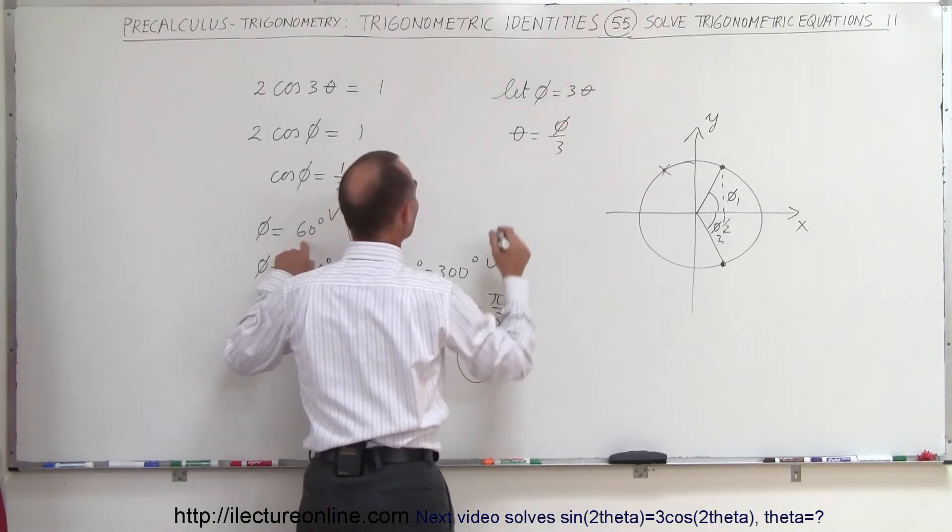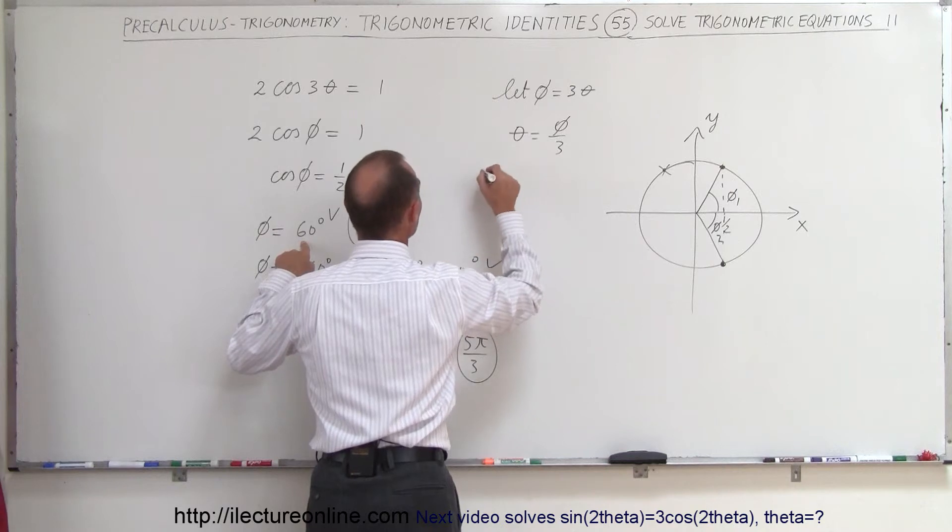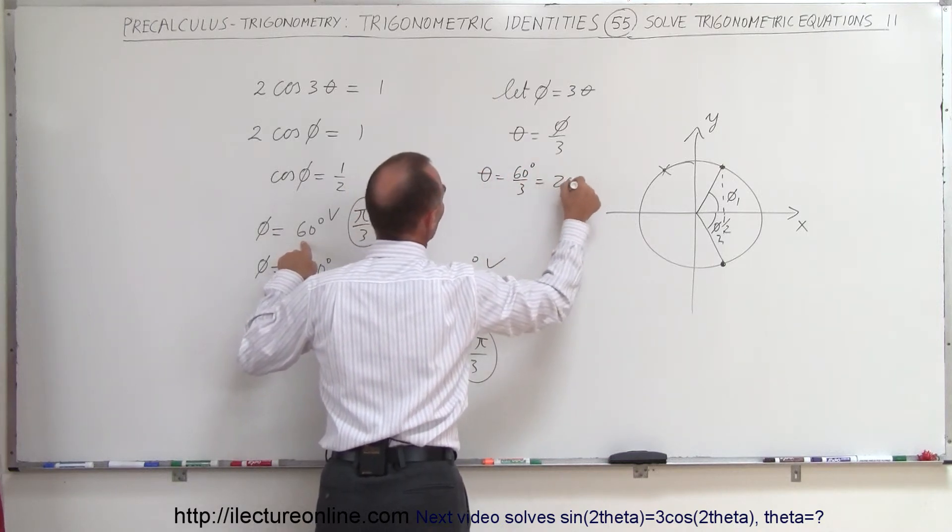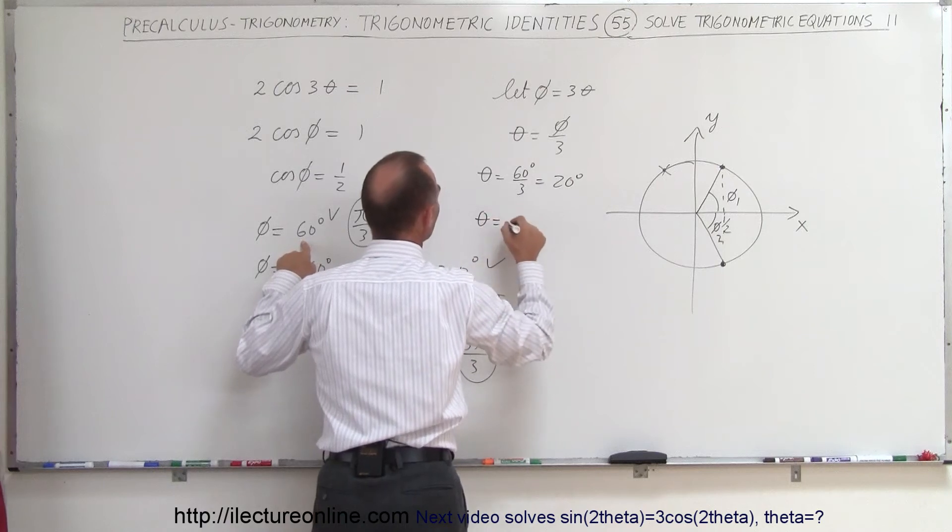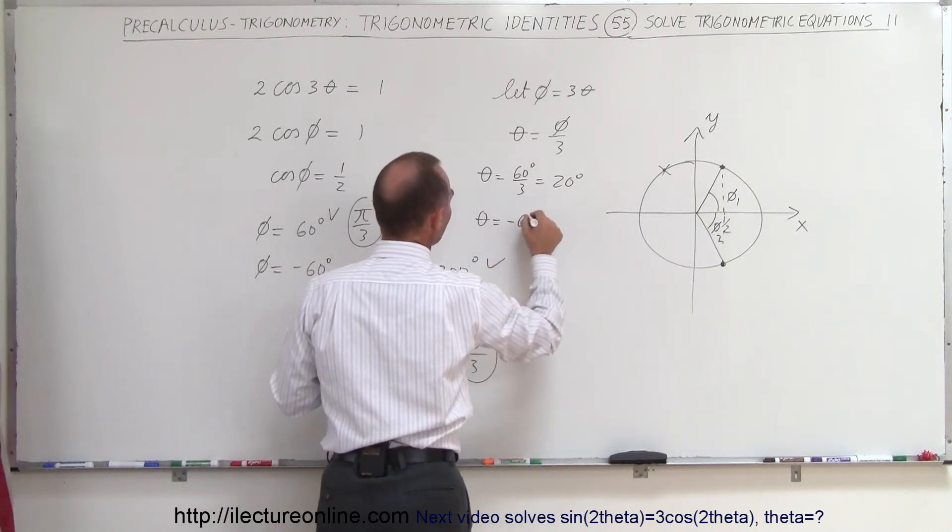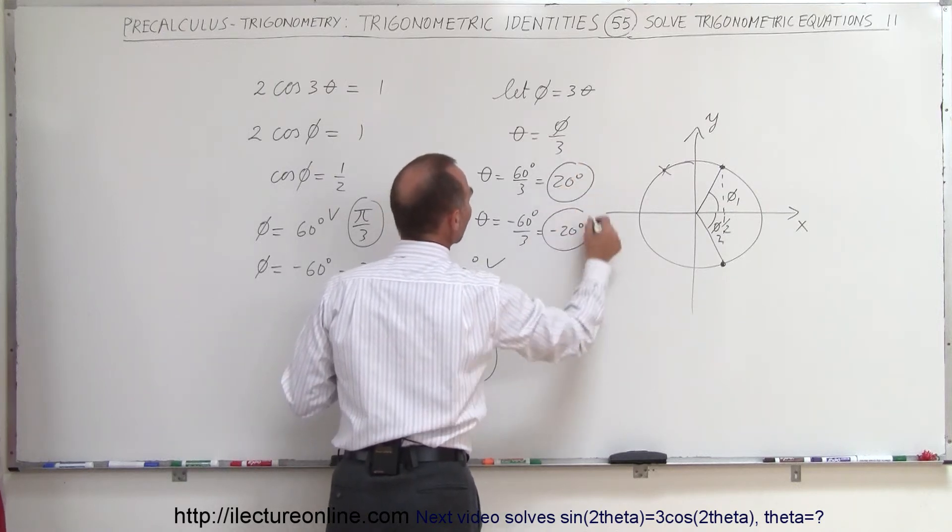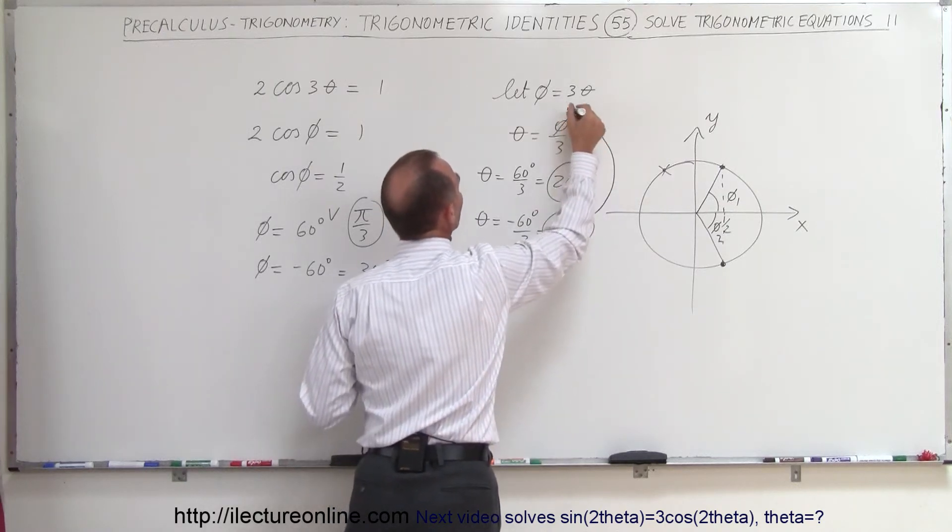We can say that theta is equal to phi divided by 3. So, on one occasion, when phi was equal to 60 degrees, theta is equal to 60 degrees divided by 3, which is equal to 20 degrees. And theta is equal to minus 60 degrees divided by 3, which is equal to minus 20 degrees. So, these are the real answers for the variable theta.